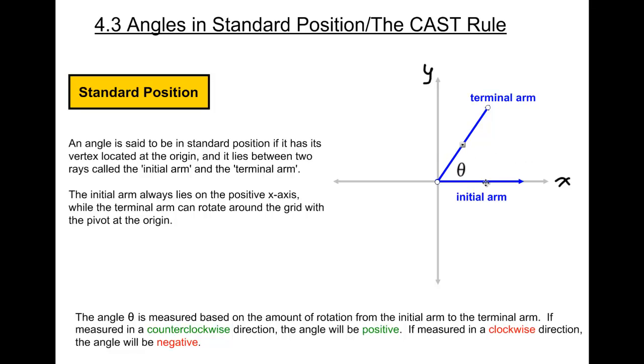We always measure an angle starting from the initial arm and then moving all the way to the terminal arm. So it sort of works in a counter-clockwise fashion. And when we move counter-clockwise from the initial arm going up to the terminal arm, that angle there would be a positive angle. Whereas if I measured it going in a clockwise fashion from the initial arm, going around this way, we would end up with a negative angle. We're going to discuss that a bit later on in a future lesson.